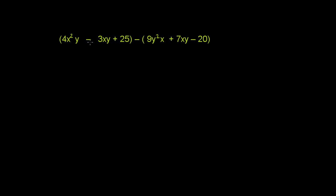We've got 4x squared y minus 3xy plus 25, minus the entire expression 9y squared x plus 7xy minus 20.